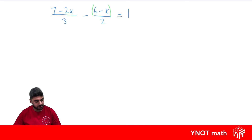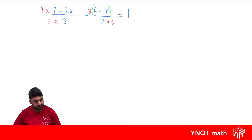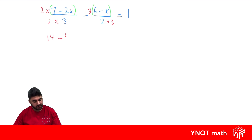We need the lowest common multiple of 3 and 2, which is 6. To make the first denominator 6, multiply by 2 — and whatever we do to the denominator we do to the numerator. To make the second denominator 6, multiply by 3, and do the same to that numerator. Expanding: 2 times 7 is 14, 2 times minus 2x is minus 4x, all over 6. The second fraction stays factorized as 3(6 minus x) over 6, equals 1.